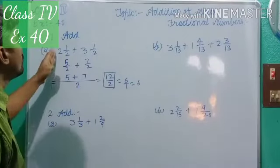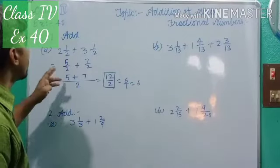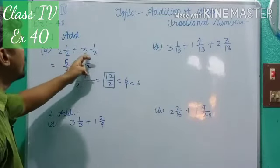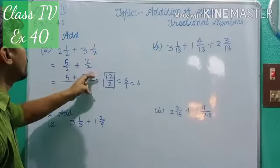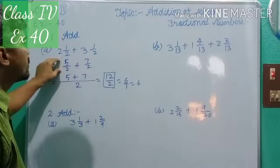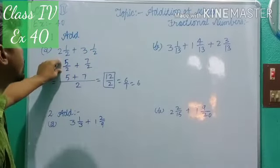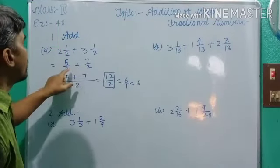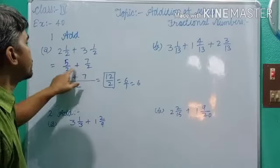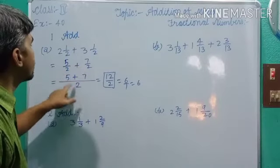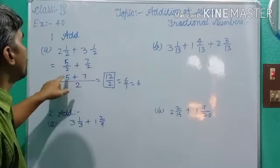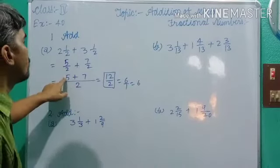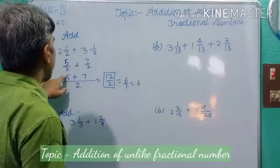You understand. First, convert into Improper Fractions: 2 and 4 gives 5 by 2, and 3 and 6 gives 7 by 2. This is like fractions — the type I taught in previous classes: 5 by 2 plus 7 by 2. The LCM of the denominators is equal to 2. So 2 divided by 2 equals 1, and 5 multiplied by 1 equals 5.